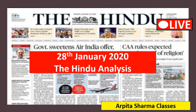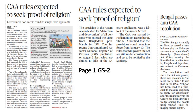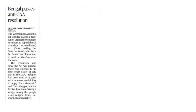Now let's start decoding The Hindu newspaper. On page number 1, you will find this particular news: CAA rules expected to seek proof of religion, and Bengal passes anti-CAA resolution. These topics are related to your GS paper 2. The West Bengal Assembly passed a resolution urging the union government to repeal — meaning cancel — the Citizenship Amendment Act.